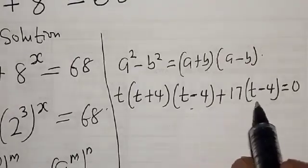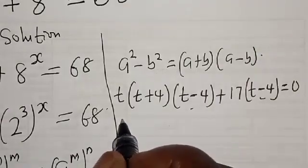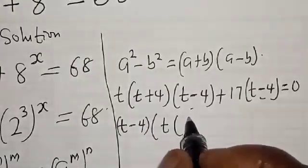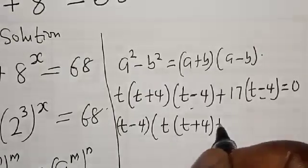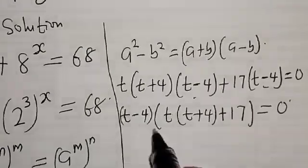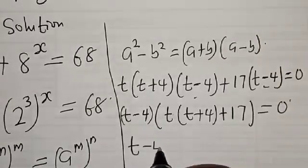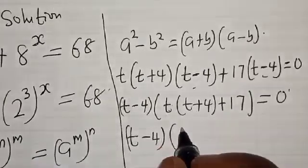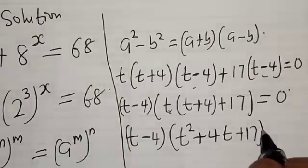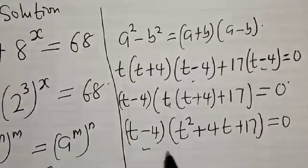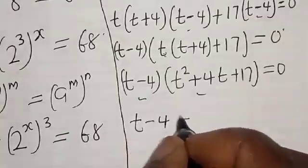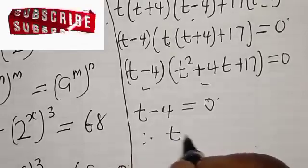Now, something is common. We have t minus 4 here and t minus 4 here. We can bring it out. We have t minus 4, multiplied by t times t plus 4 plus 17, is equal to 0. Now, we have t minus 4 is equal to 0. Therefore, t is equal to 4.